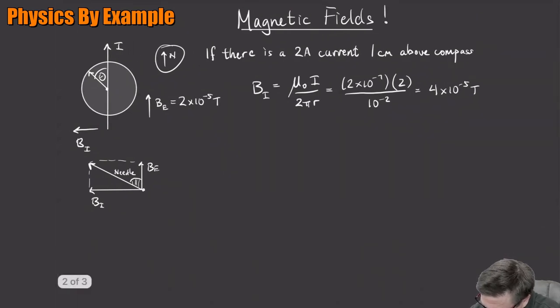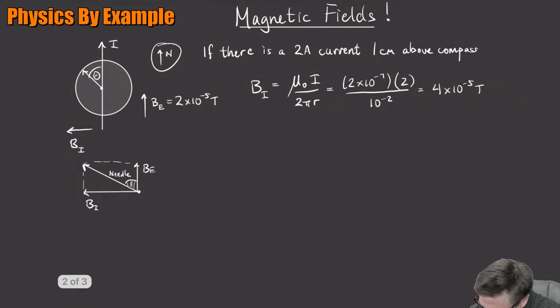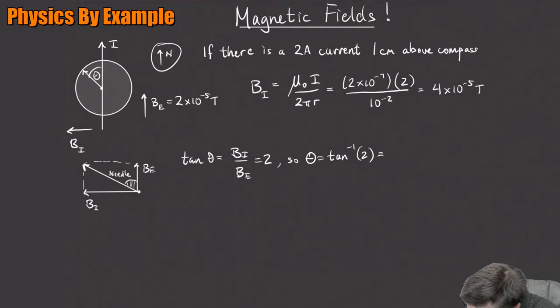So how do I figure it out? That deflection angle, let's see, the tangent. What is the tangent of that angle? The tangent of that angle is the opposite over the adjacent. So that's going to be B, I over B, E. So that's 2. So the angle is just going to be the inverse tangent of 2. And what is that? That's like, I don't know, 63 degrees, something like that. So that'll be the deflection of the compass needle.